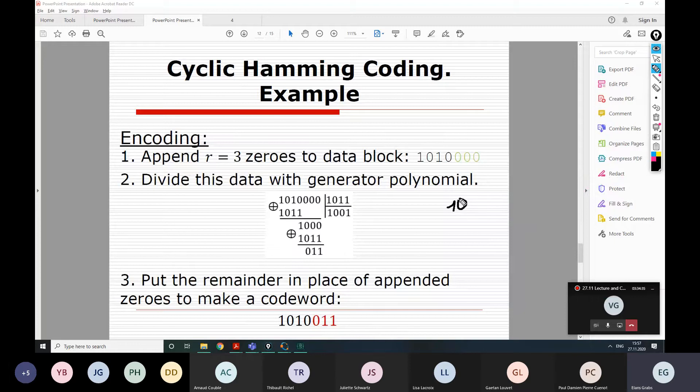We start with our data block, and for that data block we append three, or in general, R zeros. Then we start division with our generator polynomial, 1, 0, 1, 1. We start from the first symbol 1. So, if you have first symbol 0, then you start dividing from the second if it's 1, and so on. Basically, the division starts from the first symbol 1, specifically 1, not 0.